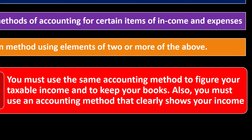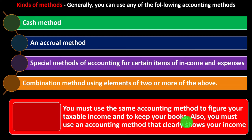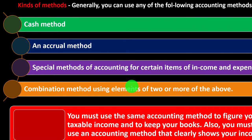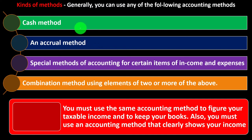You must use an accounting method that clearly shows your income and the same method for taxes and your books. Some people do their books on an accrual method because accrual is more accurate for internal reporting, but want to use cash for taxes to potentially get a better tax result. The IRS is essentially trying to prevent that — if you use a method for bookkeeping, you should use it for taxes, and any deviation should have a legitimate bookkeeping reason.